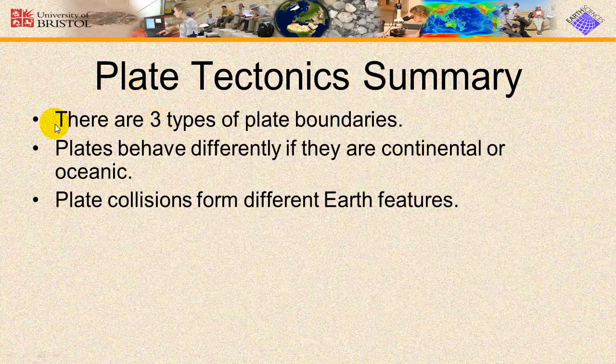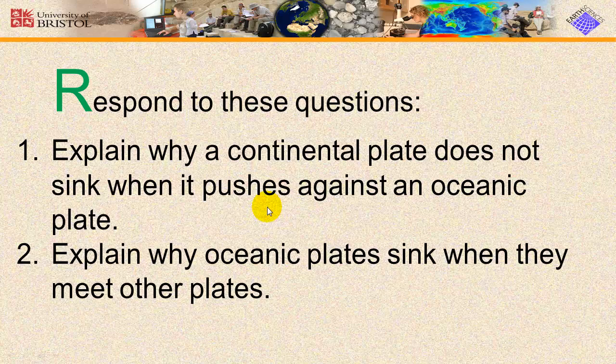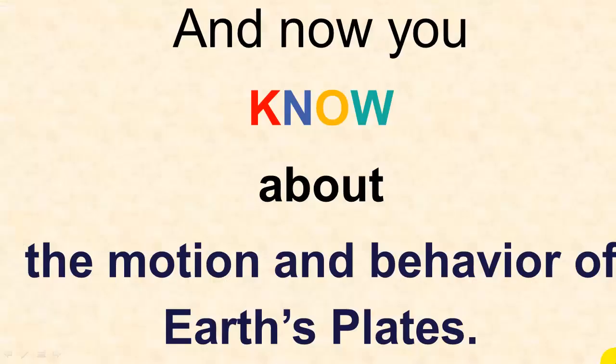In this video, you have learned about the three types of plate boundaries. You've learned that plates behave differently depending on whether they are continental or oceanic, and you've learned about some of Earth's features that are formed when different plates interact. Don't forget your three R's: review your notes, do your reflections, and respond to these questions. One: explain why a continental plate does not sink when it's pushed into an oceanic plate. Two: explain why oceanic plates sink when they meet other plates. Now you know about the motion and behavior of Earth's plates. Thanks for watching.